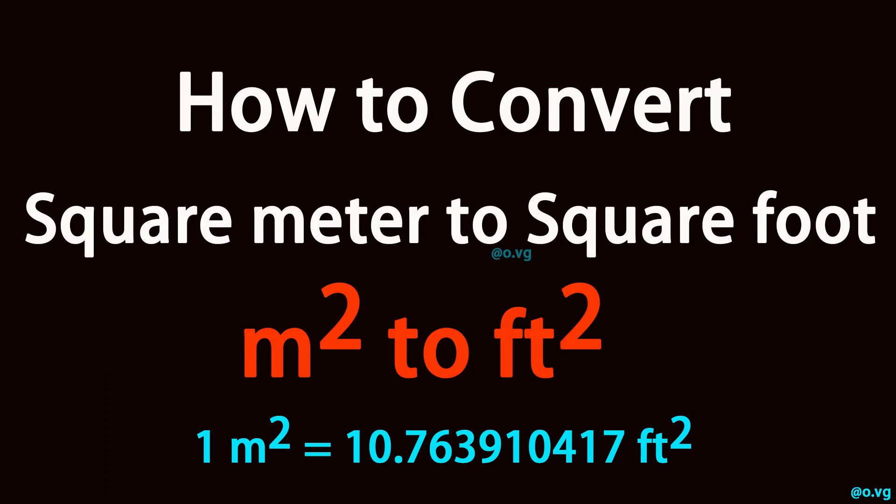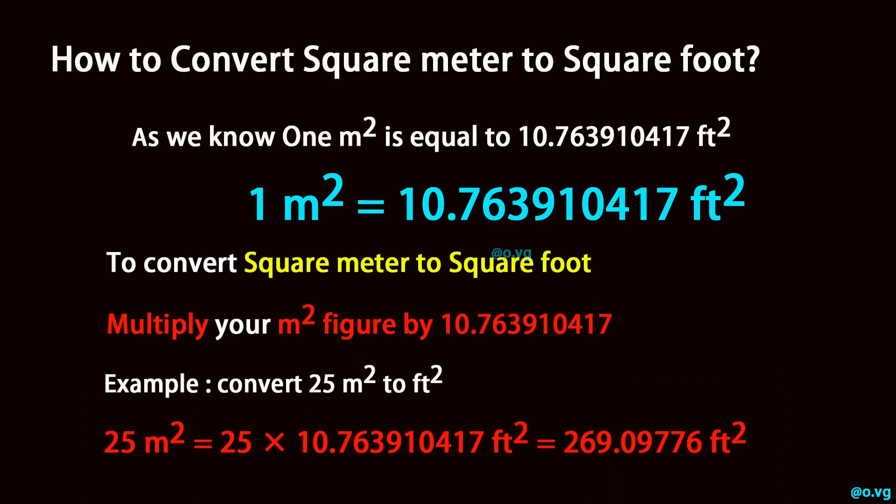How to convert square meter to square foot? As we know, one square meter is equal to 10.763910417 square foot.